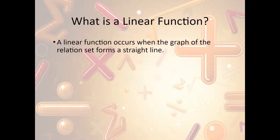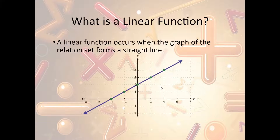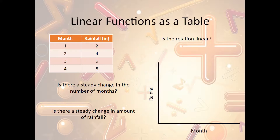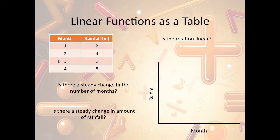What is a linear function? A linear function occurs when the graph of a relation set forms a straight line. What does a linear function look like as a table? The rule is: if the change in each column is consistent and involves addition, then the set is linear. For instance, x values of 1, 2, 3, 4 — consistent, adding by 1. And y values of 2, 4, 6, 8 — consistent, adding by 2. So there's a steady change in both columns by addition, meaning this set is linear.